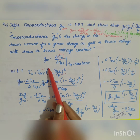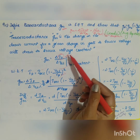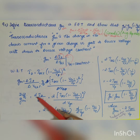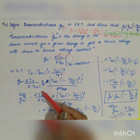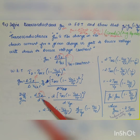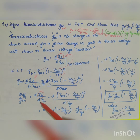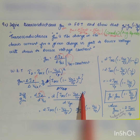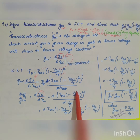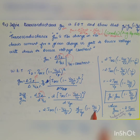Substituting the value of id into the first equation and differentiating, gm equals d/d(vgs) of idss into (1 minus vgs divided by vp) squared. Differentiating gives 2 into idss into (1 minus vgs divided by vp), multiplied by d/d(vgs) of (1 minus vgs divided by vp).